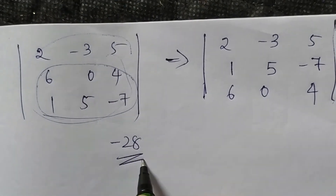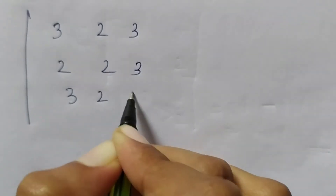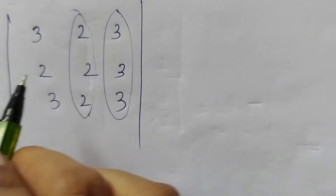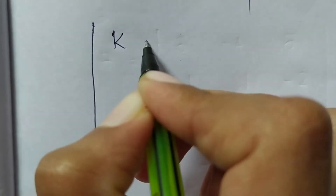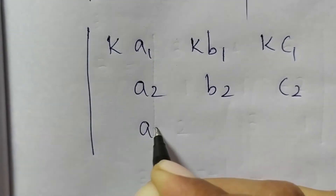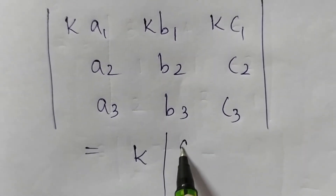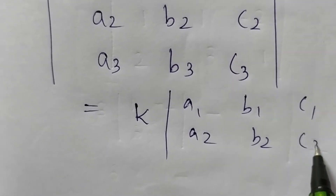This determinant value is minus 28. If we change two rows, the sign of the determinant changes to the opposite — the determinant value remains minus 28 but with opposite sign. Another property: if two rows or columns are identical, the determinant value is zero.